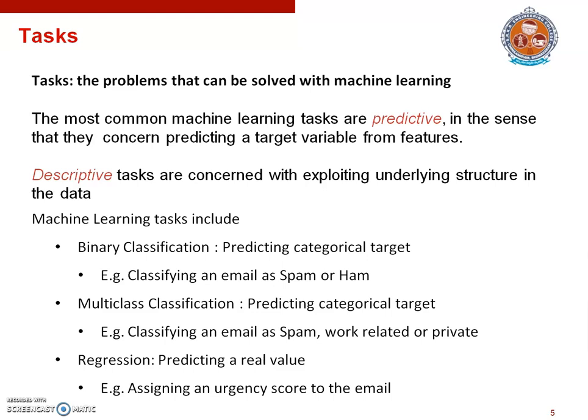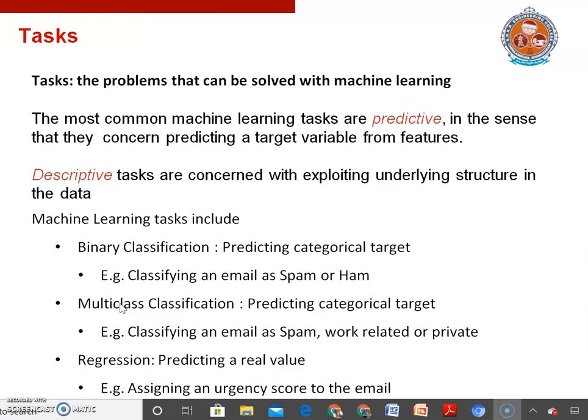In ham we may want to distinguish between work-related emails and private messages, giving three classes: spam emails, work-related emails, and private messages. We could approach this using two binary classification tasks: first, distinguish spam from ham, and second, among ham emails, distinguish work-related from private ones. However, some useful information may be lost this way, as some spam emails tend to look like private rather than work-related messages. For this reason, it is often beneficial to view multiclass classification as a separate machine learning task in its own right.